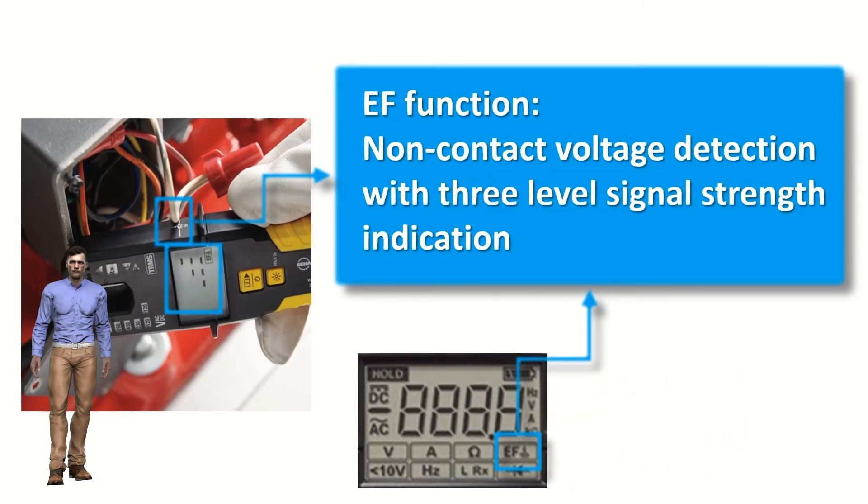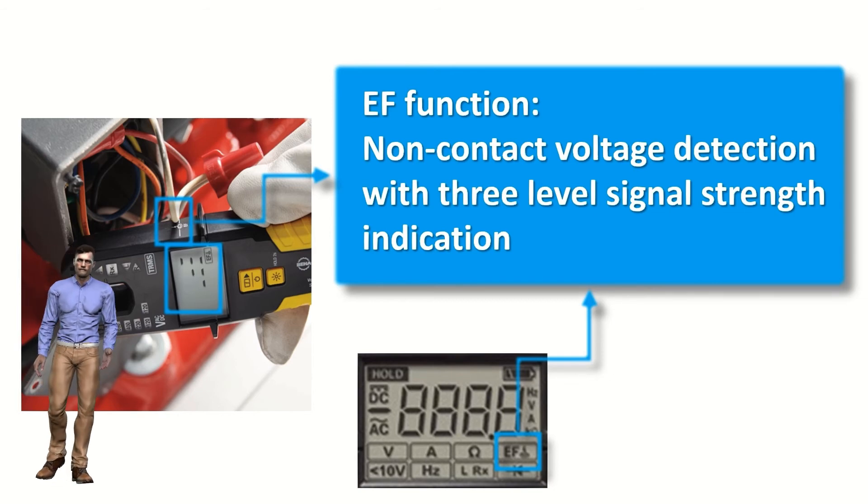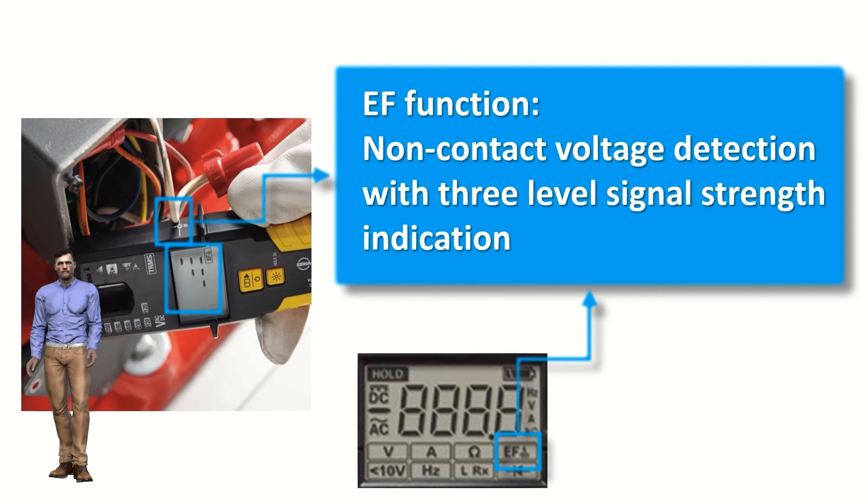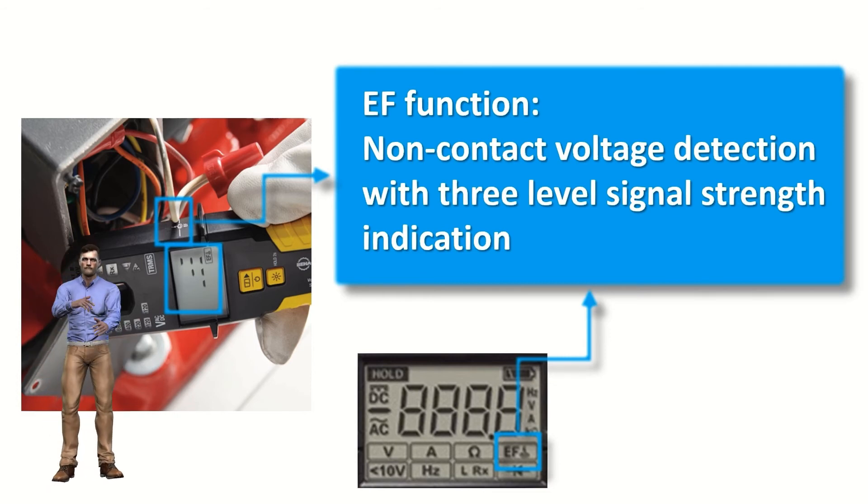The next function that we can select is the non-contact voltage detection function, called EF. By bringing the cable closer to the right side of the clamp, where there is a mark with the EF indication, the clamp will indicate both with sound and with a scale of 3 levels the presence of voltage in the cable. This function is very useful for safety reasons, to determine if a cable is under voltage, or to find for example the point of internal break in a cable.